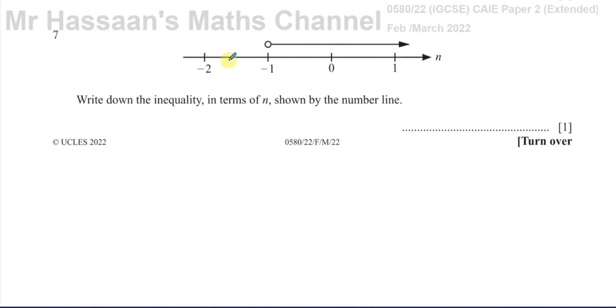So here we have, this is the n-axis, not the x-axis, it's called the n-axis, and we can see that the numbers are starting from minus 1 onwards.